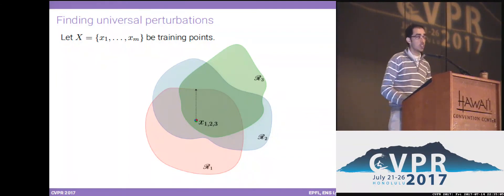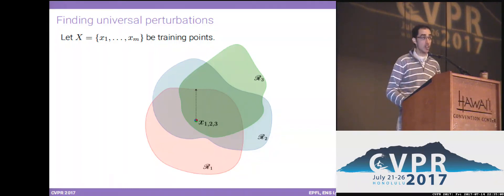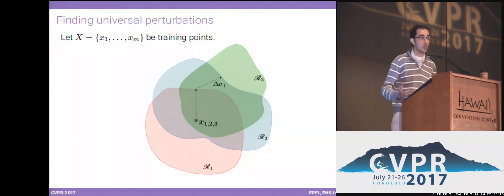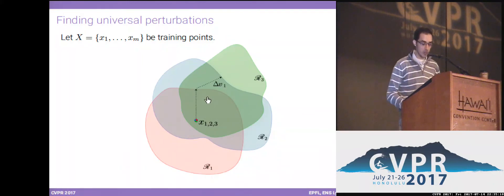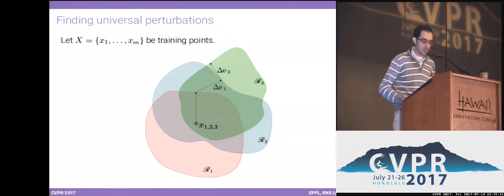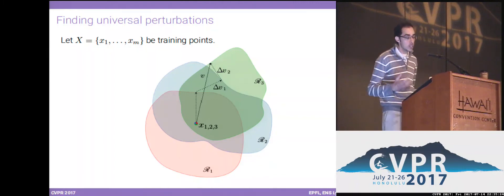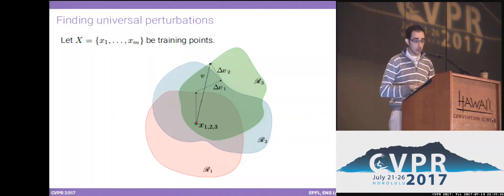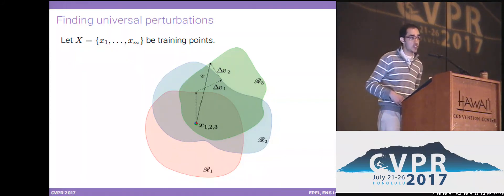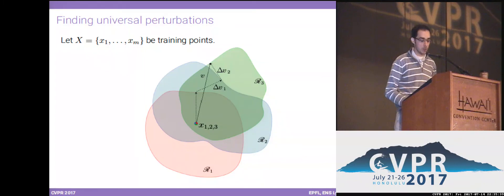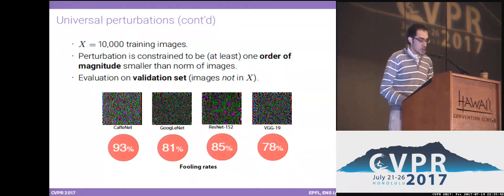This perturbation fools the first data point but not the other two. So I add an incremental perturbation to also fool the second data point. But the sum of these two perturbations fools the first two points but not the third. I do this iteratively until I get a perturbation that goes outside all three classification regions. To ensure the universal perturbation is sufficiently small, I project at each step onto the LP ball of a user-specified radius.